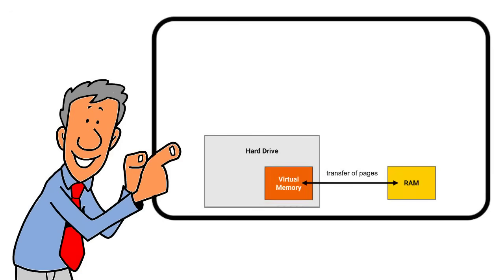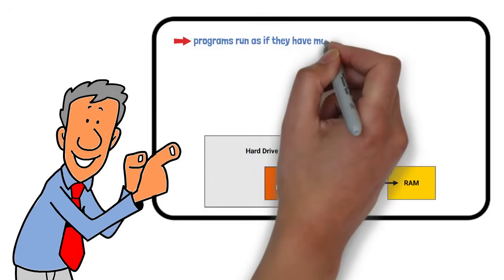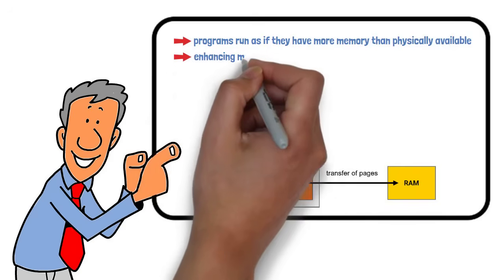Virtual memory extends RAM using hard disk space. It lets programs run as if they have more memory than physically available, enhancing multitasking and efficiency.